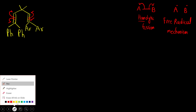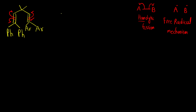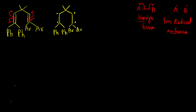The first step is breaking of both pi bonds, and what we get is formation of a diradical. There is one radical here and one radical there. We have Ph, Ph on one side and Ar, Ar on the other side.